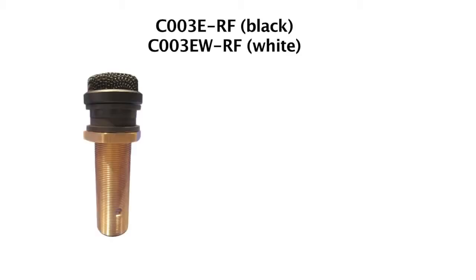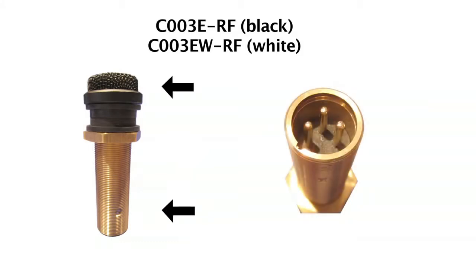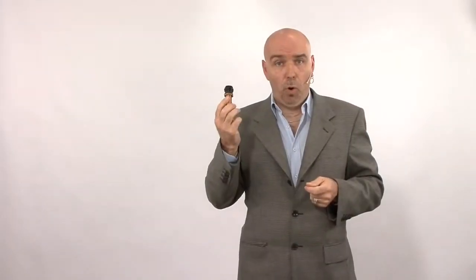Starting with the C003ERF, it has a low profile top mounted on a solid brass barrel terminated with an XLR. It is RF immune and also comes with two rubber shock mounts. It's available in black or in white.